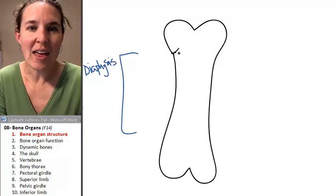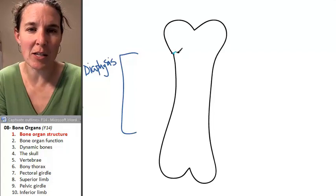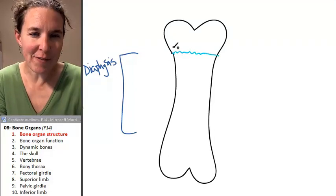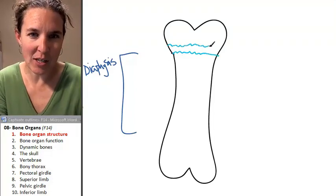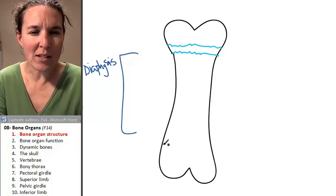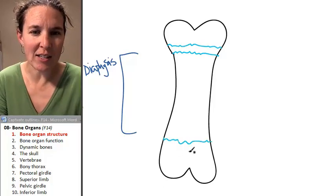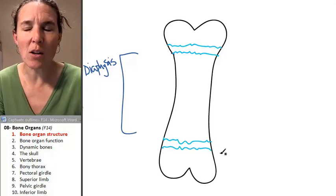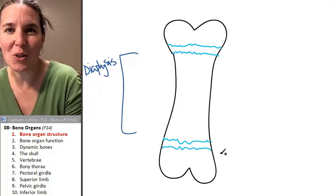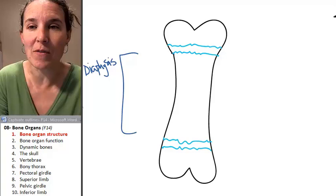Then there is an epiphyseal plate. We talked about that. What was, just out of curiosity, to see if you all remember this, what kind of tissue was found in the epiphyseal plate?